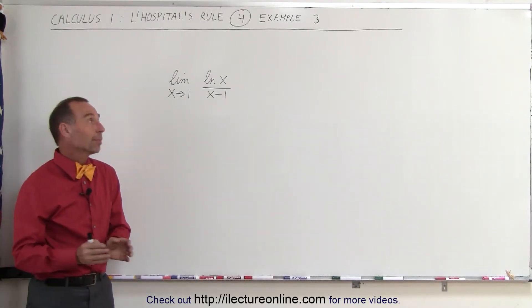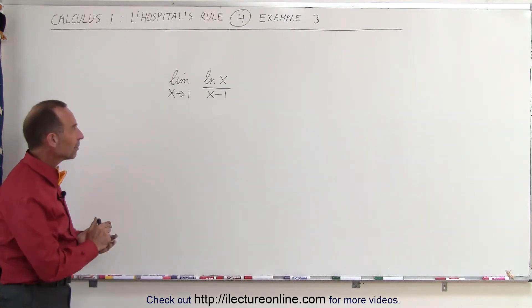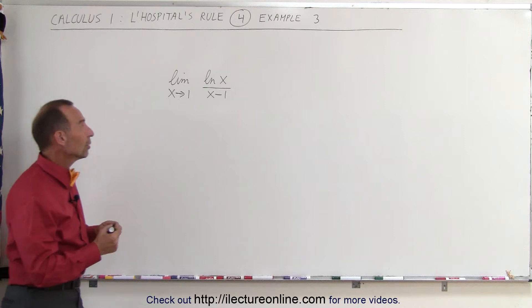Welcome to ElectronLine. Our next example is the natural log of x divided by x minus 1. We're trying to find the limit of that as x approaches 1. So let's go ahead and plug in the limit and see what happens.